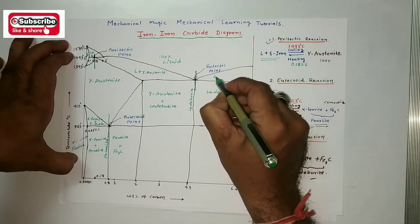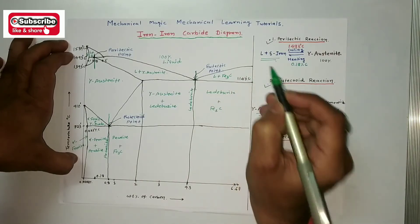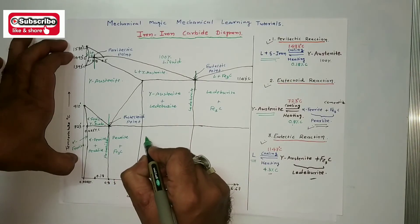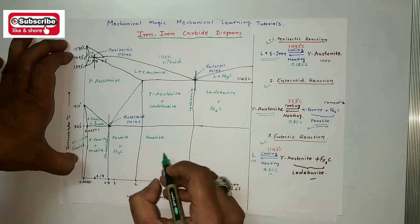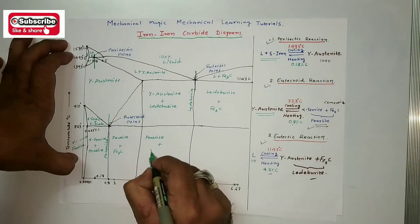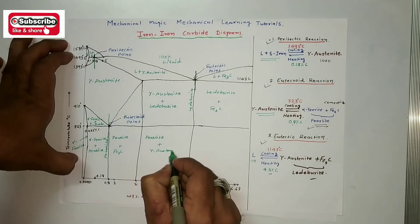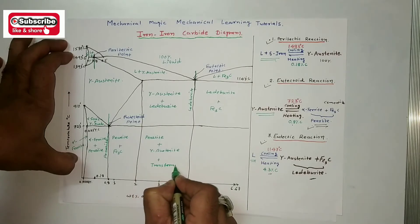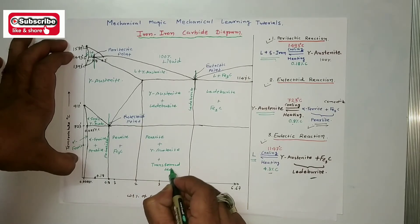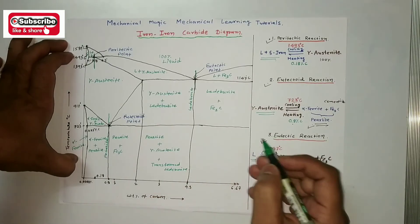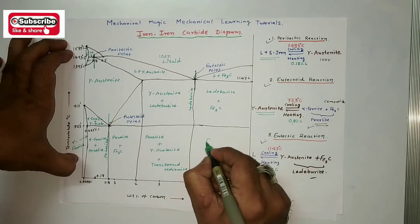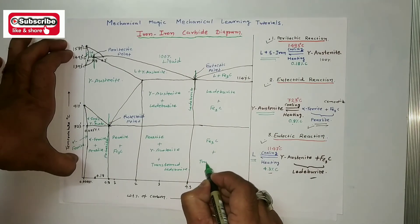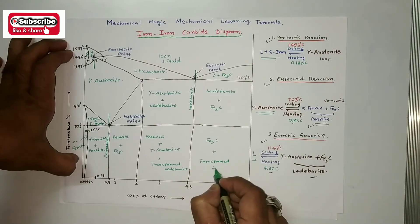At room temperature, this pearlite region transforms. The region becomes pearlite plus gamma austenite plus transformed ledeburite. On the higher carbon side, the region becomes Fe3C — that means cementite — plus transformed ledeburite.